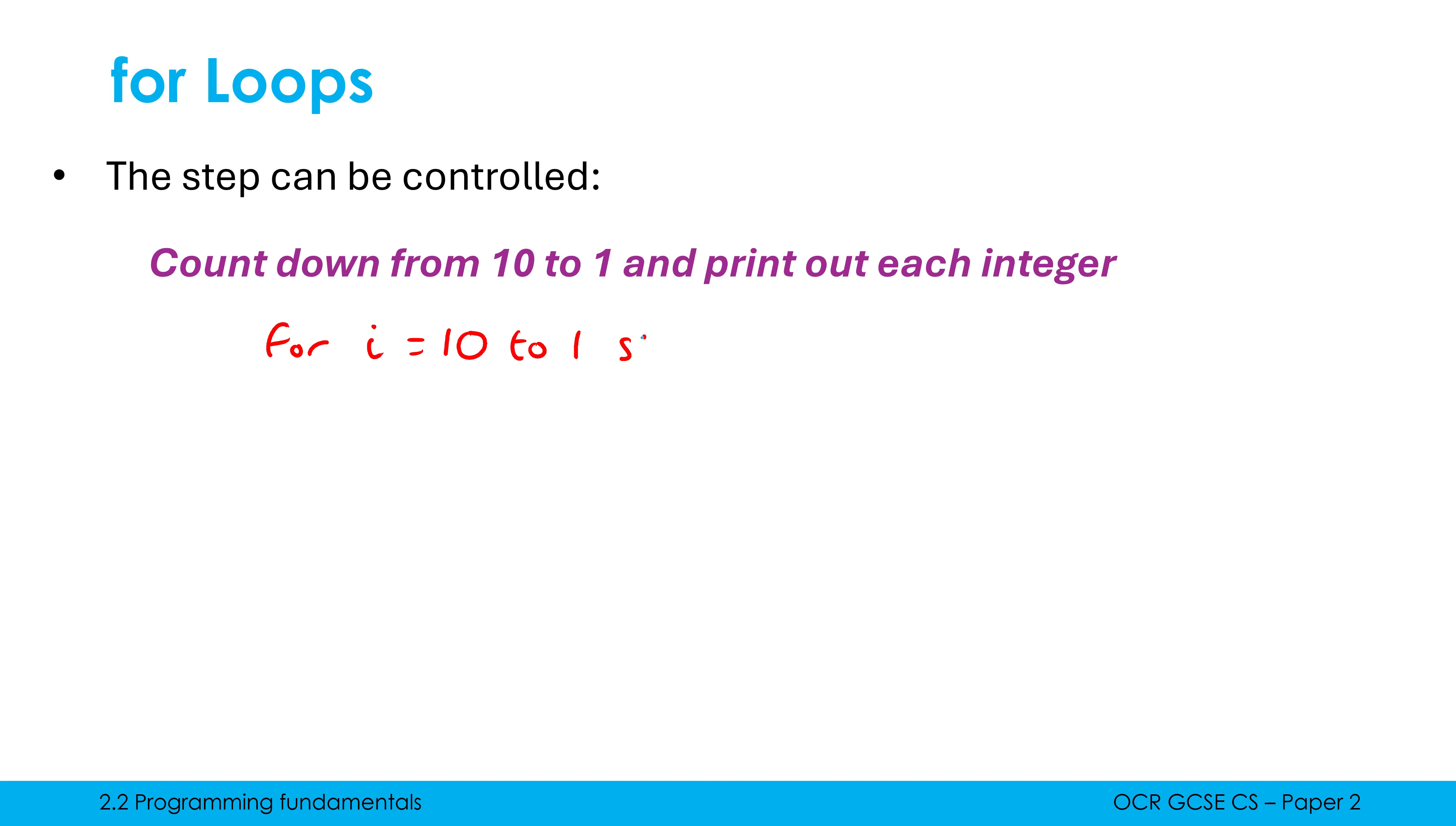So optionally, we can add the word step. Then we can follow it with a number. And this step is what happens to i each time it iterates. So by default, it's plussing one. This time around, I want it to count down for each integer. Therefore, I want to not plus one. I want to subtract one each time around.